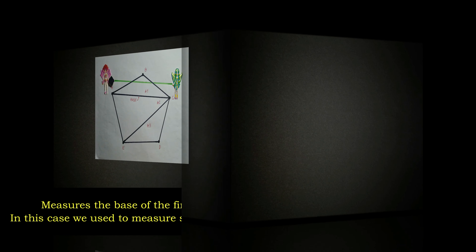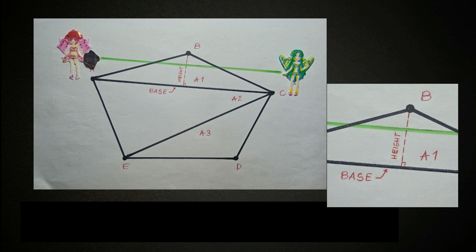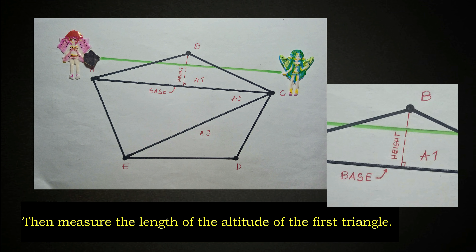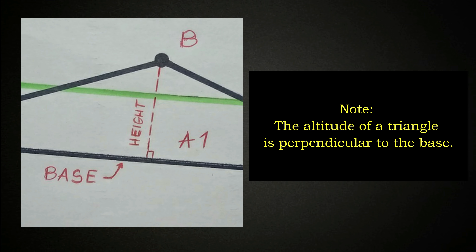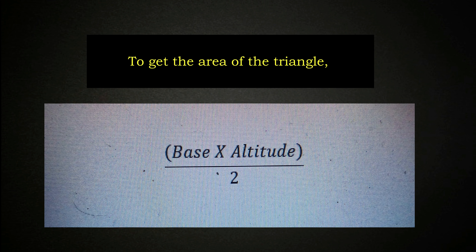Measure the base of the first triangle chosen in the polygon using tape. In this case, measure side AC, which will serve as the base of the first triangle. Then measure the length of the altitude of the first triangle. Note that the altitude of a triangle is perpendicular to the base. Record the length of the base and altitude on Table 3.1, area determination by base and altitude. To get the area of the triangle, divide the product of the base and altitude by 2.